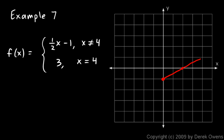But when we get to x equals four, we can't graph that point, because the definition says the function is one-half x minus one only as long as x is not equal to four. So we have to put a little hole in the graph right there. This line goes on and on in both directions, but there's that one little piece omitted from it.